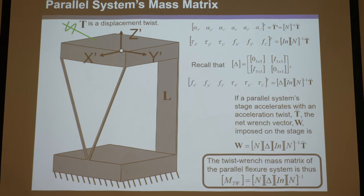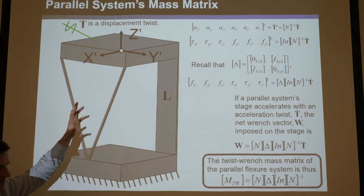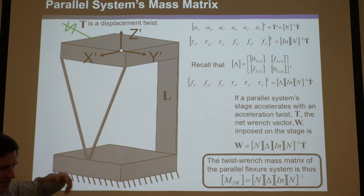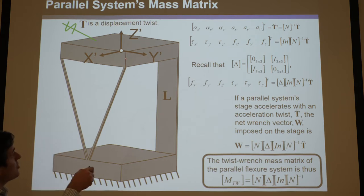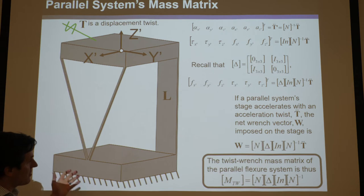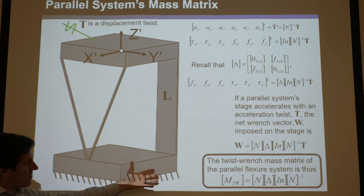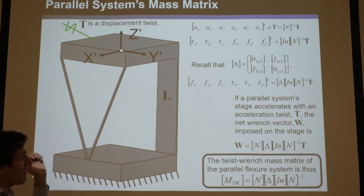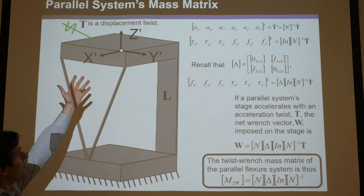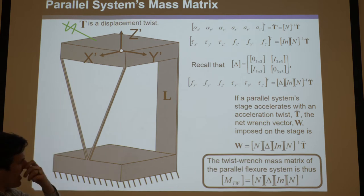So there it is, and it's a six by six matrix. To make a mass matrix for a parallel system — meaning two rigid bodies directly connected to each other — one of the rigid bodies is going to be grounded, so you don't care about the mass of that. Then all you do is find the mass of a single stage.